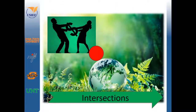Each of these elements of the triple bottom line — equity, ecology, and economy, or as they are also known, people, planet, and profit — have intersections. Each of these modes may represent some blind spots, and it's important not to neglect important issues in one area while focusing on another. Now we're going to take a moment to look at how these three elements of the triple bottom line intersect.